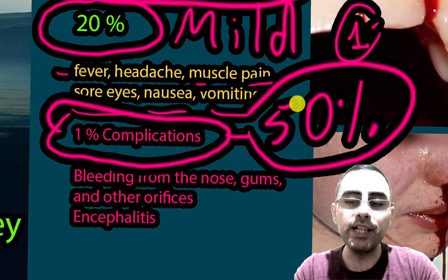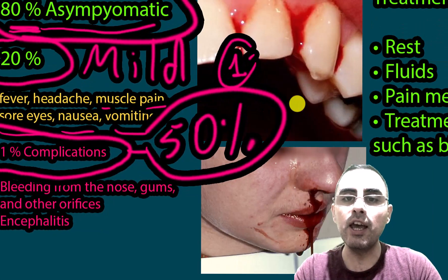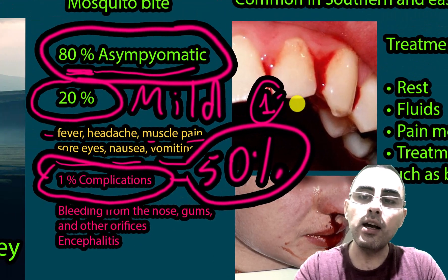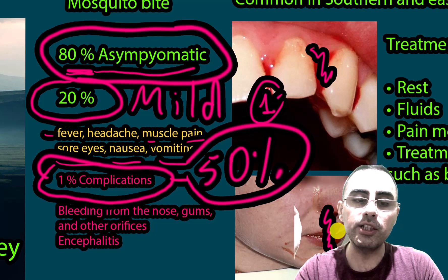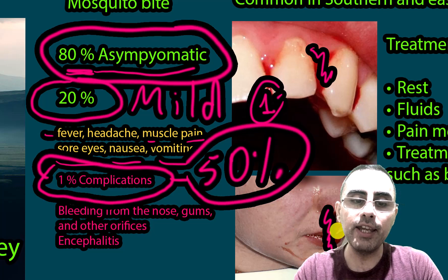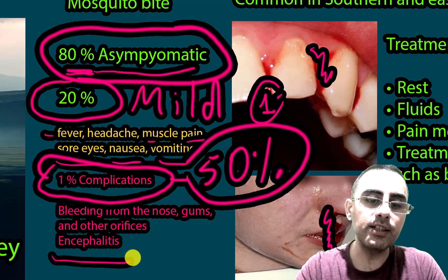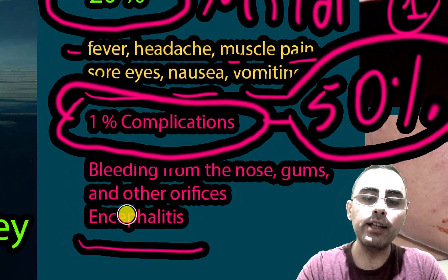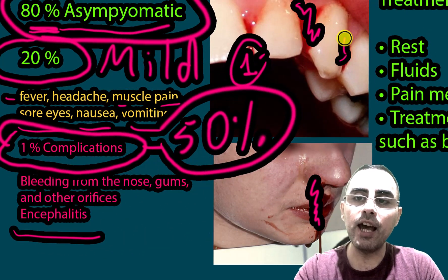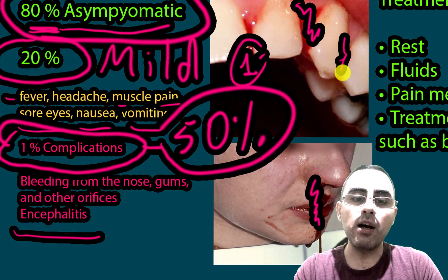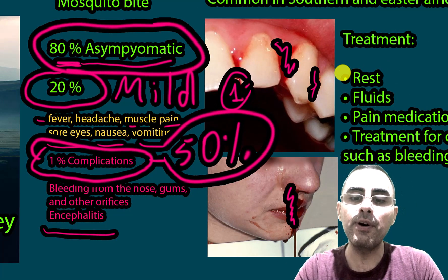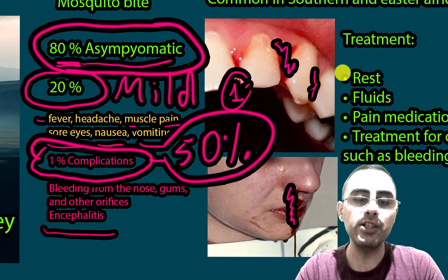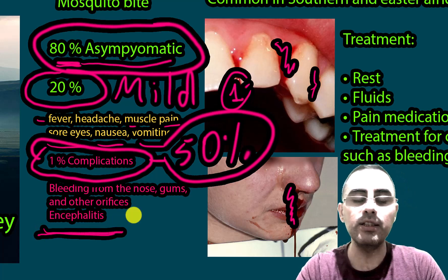What are the complications and signs of serious disease? Signs include bleeding from the gums, bleeding from the nose, and bleeding from other orifices of the body. There is also altered mental state, which means encephalitis — inflammation of the brain. This bleeding is a sign of a hemorrhagic disorder caused by the virus, known as hemorrhagic fever. Both hemorrhagic fever and encephalitis are serious complications.